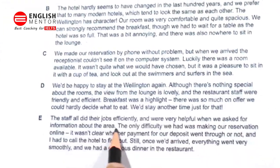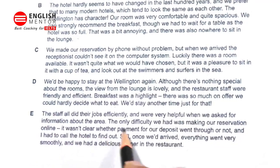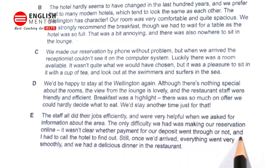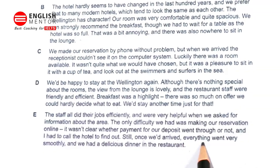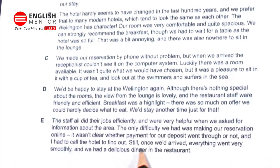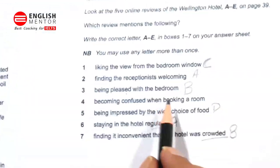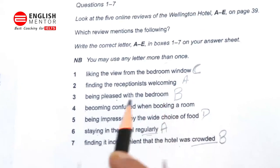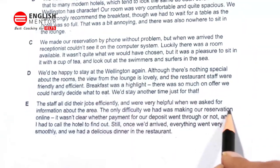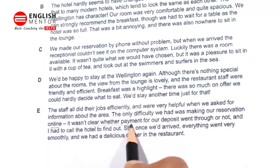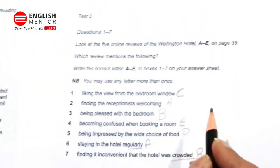Now the last one, E: 'The staff did all their jobs efficiently and were very helpful when we asked for information about the area. The only difficulty we had was making our reservation online — it wasn't clear whether payment for our deposit went through or not, and I had to call the hotel to find out. Still, once we arrived everything went very smoothly and we had a delicious dinner in the restaurant.' The remaining option four — becoming confused when booking a room — matches: 'The only difficulty we had was making our reservation online.' So the answer for option four will be E.